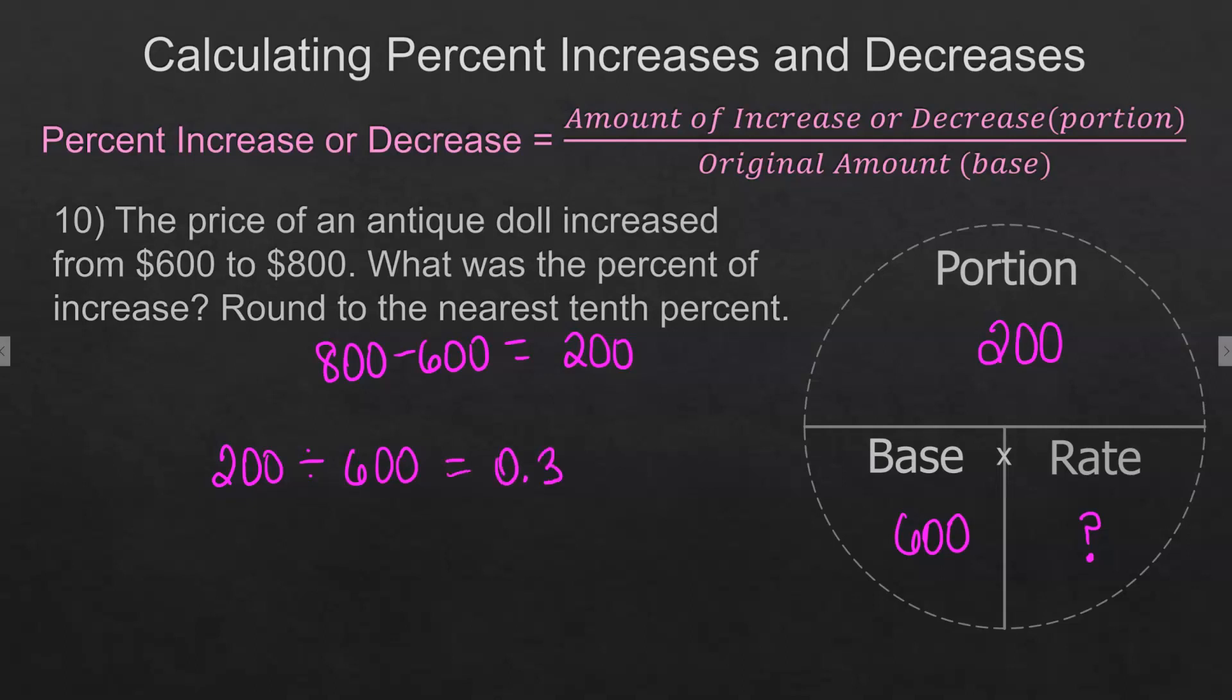We've got a repeating 3. We're rounding to the nearest tenth of a percent. So it had an increase of 33.3% because it increased from 600 to 800 dollars. And that was a third, basically, of the price.